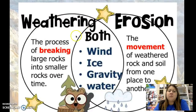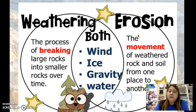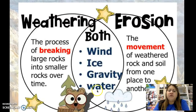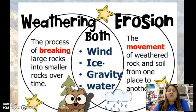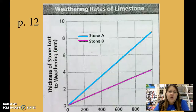In the Venn diagram: weathering breaks down rocks, erosion moves rocks from one place to another, and both processes are driven by the same agents — wind, ice, gravity, and water, including running water, freezing water, and glaciers.